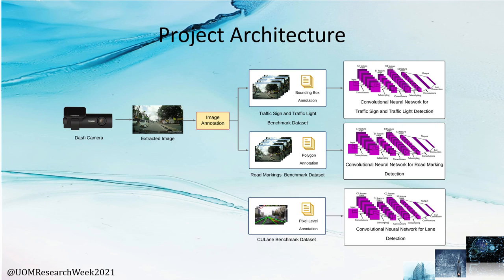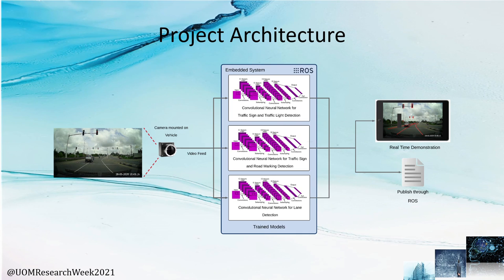We use the publicly available QLANE dataset and train a separate convolutional neural network for the lane detection task. For the real-time implementation, our initial plan was to use a camera mounted onto a vehicle to capture the street views. This video is fed to the three trained models which are integrated through the Robot Operating System deployed on an embedded system. The detection results are then demonstrated in real-time and published through ROS. However, since we did not receive the cameras on time due to import restrictions for COVID-19, pre-recorded videos are used for inference purposes.